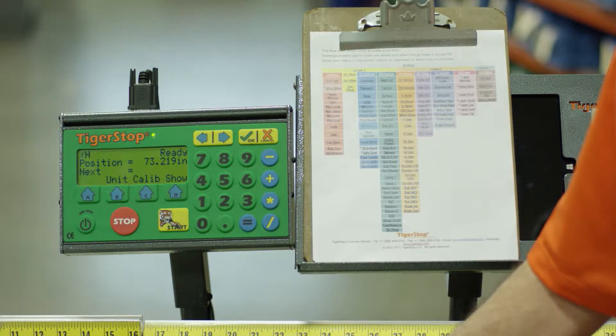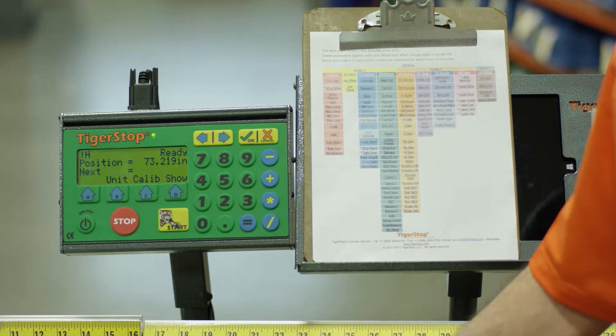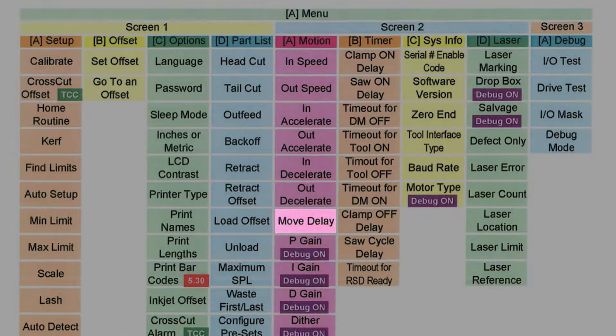When using a standard interconnect or an advanced interconnect with clamping, it's advantageous to delay the movement of the TigerStop until the clamps are out of the way. This would be handled under the setting called move delay, which is in menu number two.